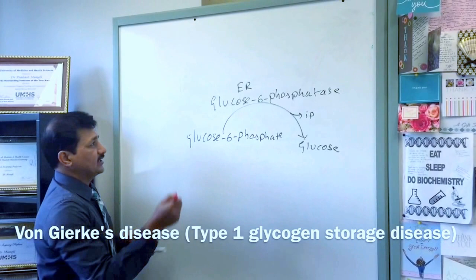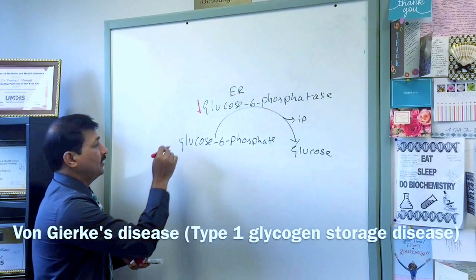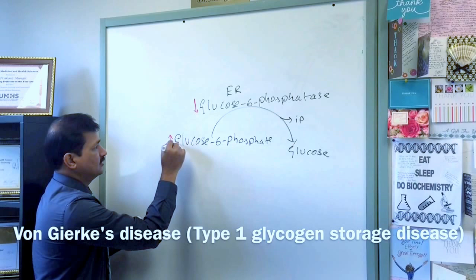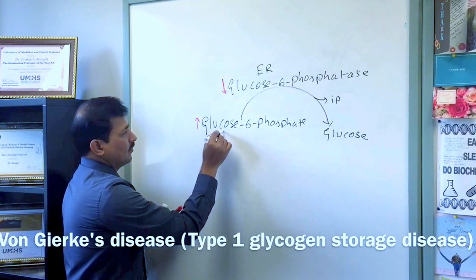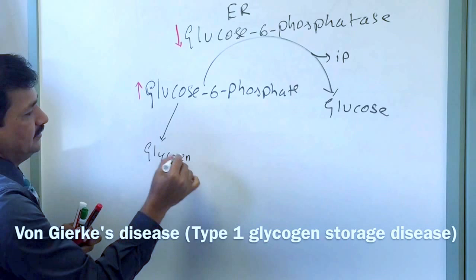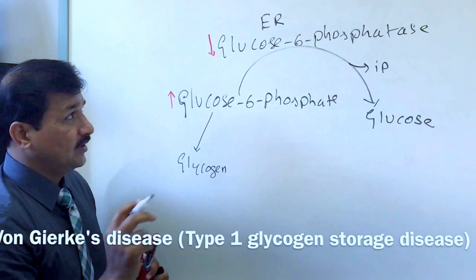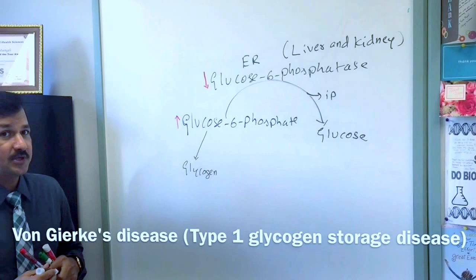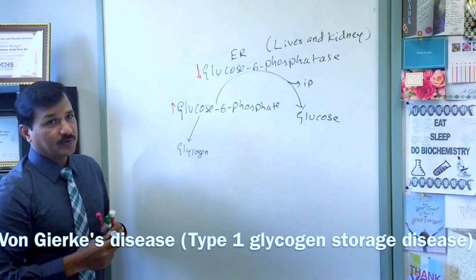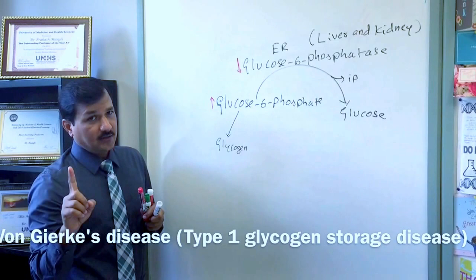If there is a deficiency of glucose-6-phosphatase enzyme, there will be a rise in glucose-6-phosphate. Glucose-6-phosphate builds up. Note that glucose-6-phosphatase is located in the liver and kidney — specifically in the endoplasmic reticulum of liver and kidney. Now that enzyme is down, leading to Von Gierke's disease type 1a.